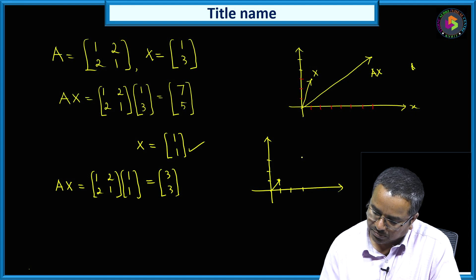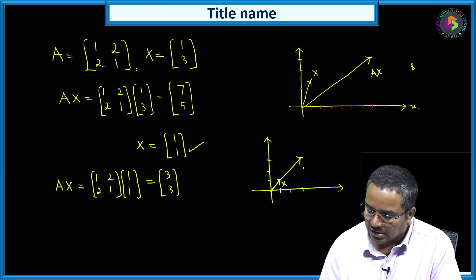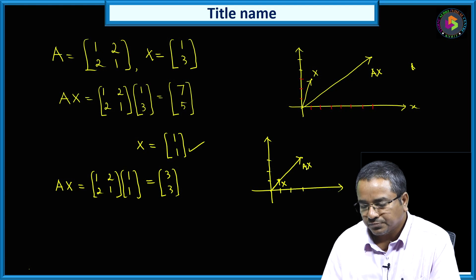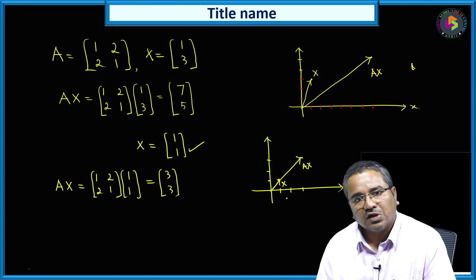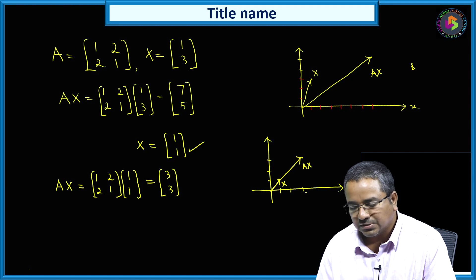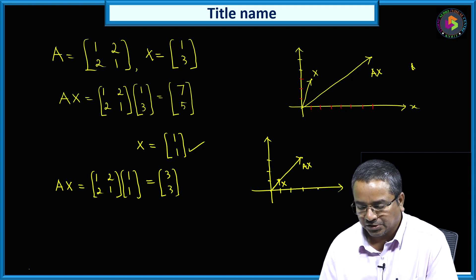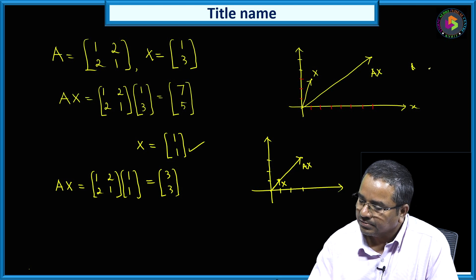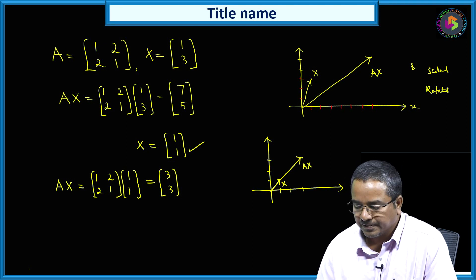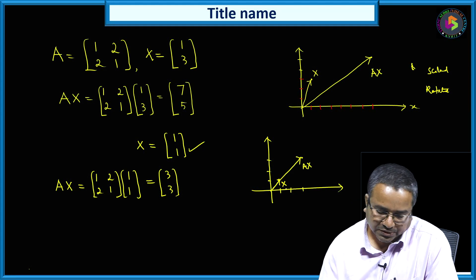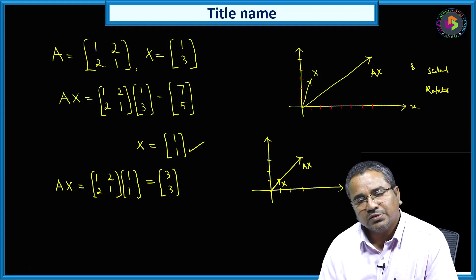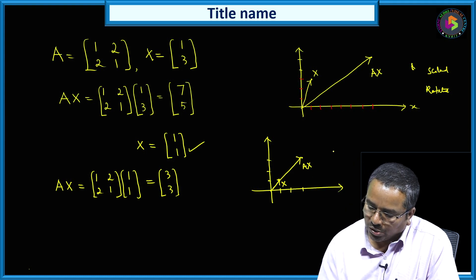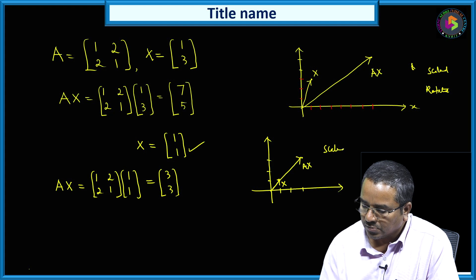Now look at this case. After multiplying, Ax is also in the same direction as x. Ax is in the same direction, just the magnitude changed. In the first case it was scaled and rotated, but in the second case, whatever direction we had, after multiplying Ax is also in the same direction — but not rotated. The second case is only scaled, not rotated.